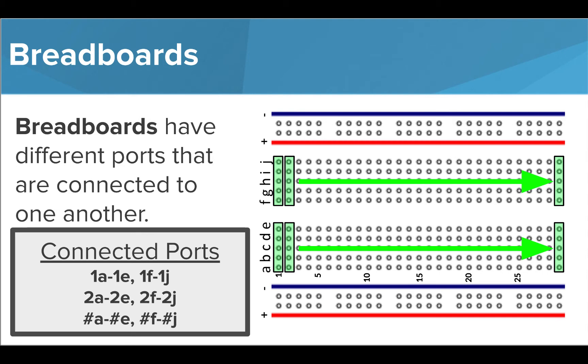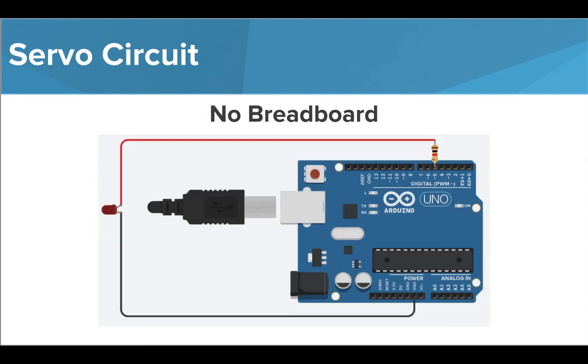Let's see how we can use these connections to build a circuit. Here's a circuit we built in the last lesson. We are plugging an LED to pin 5 using a resistor. Let's take a look at how we can build this circuit using a breadboard.